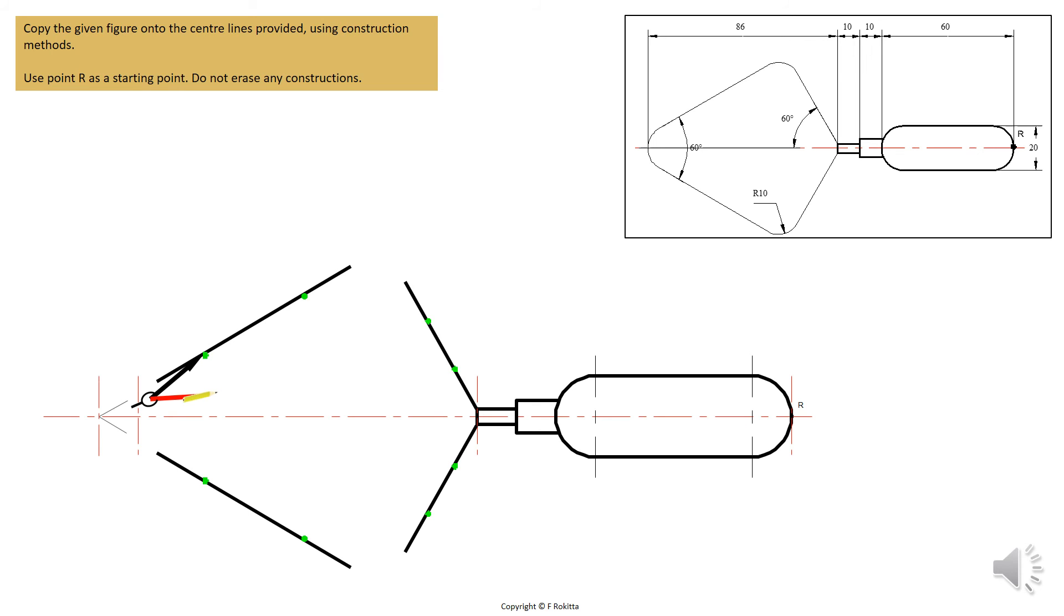Place your compass now at each one of the dots. Stretch the compass to a radius of 10 mm and draw a light construction arc above each one of these dots as you can see here. And please make sure that the radius of the compass stays at a distance of 10 mm.